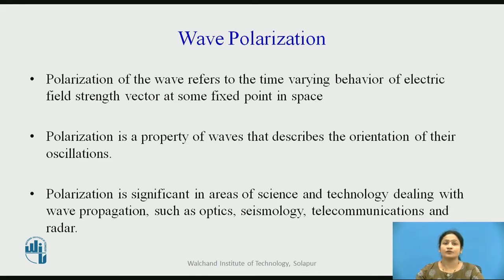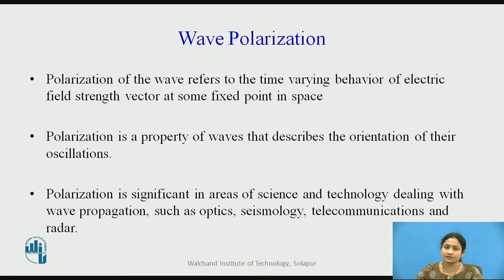As we know, a wave consists of an electric field and a magnetic field. Here we are observing the behavior of the electric field to define wave polarization. Polarization of the wave refers to the time-varying behavior of the electric field strength vector at some fixed point in space, or it can also be described as a property of the wave that describes the orientation of its oscillations.